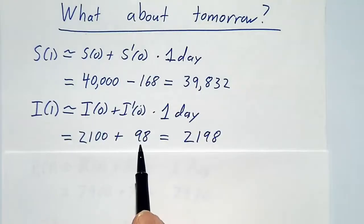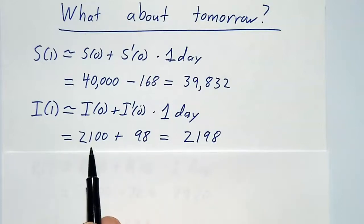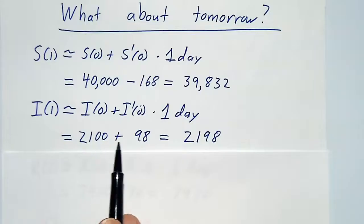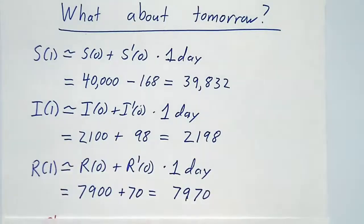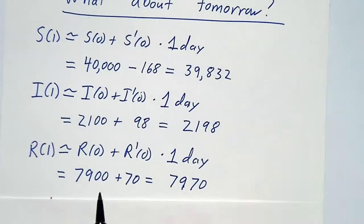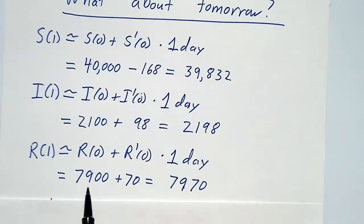And we just figured out that we were gaining actives at a rate of 98 per day. So the number of actives tomorrow is going to be the number of actives today plus 98. And the number of rejecteds tomorrow is the number of rejecteds today plus 70, because we're gaining them at 70 per day.